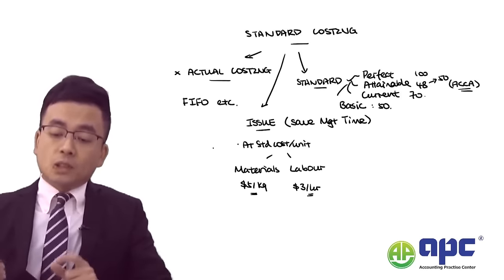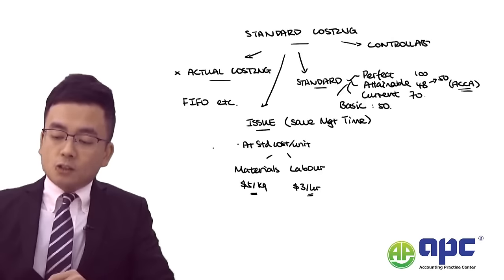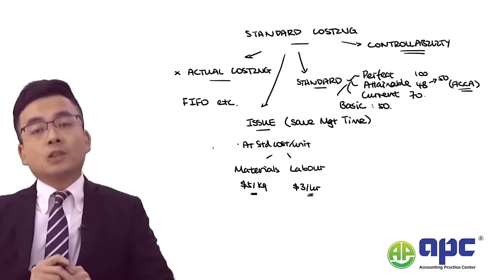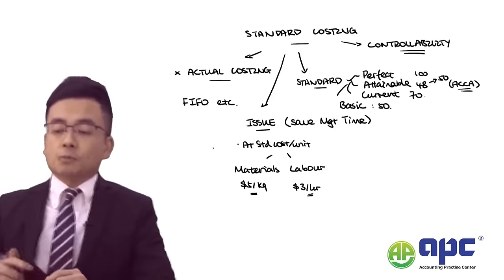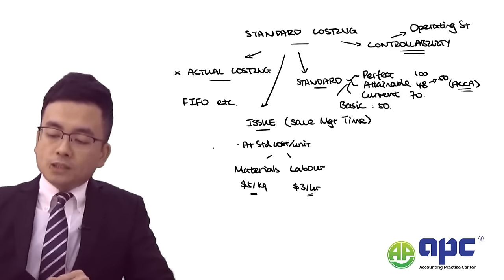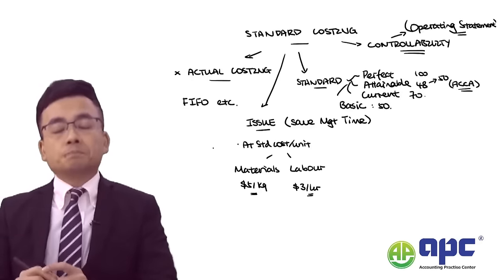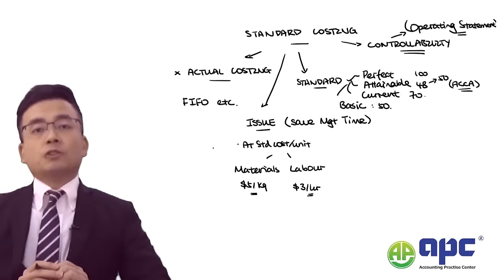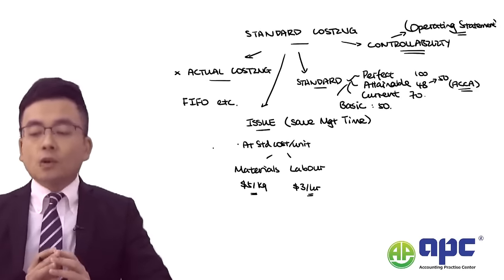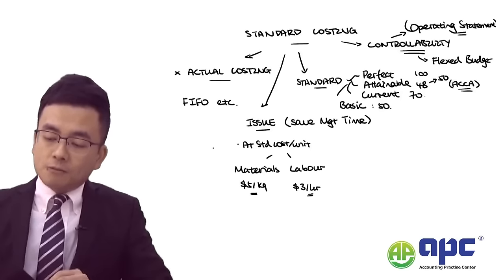Standard costing is based on the concept of controllability — something you can't control means we cannot punish you. In practice, standard costing is combined with the operating statement, which is essentially a management account — the internal statement of profit or loss. Before fully understanding the operating statement, we need to introduce the concept of the flex budget, or flexible budget.